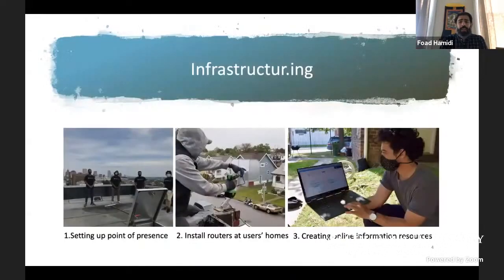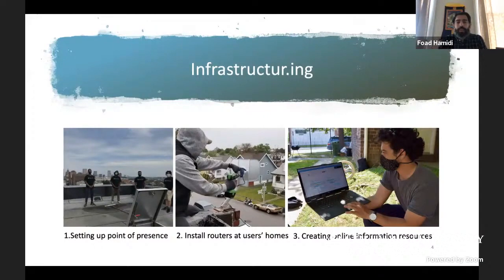Our project involves three phases. First, it involves setting up points of presence. In the city we partner with organizations that have points of access with good visibility — there should be a clear line of sight between an antenna and the routers we want to connect with. These include very tall buildings in our city and also buildings like churches that can provide this access, and our community partners have been very generous to set up that infrastructure.